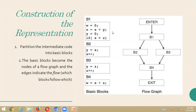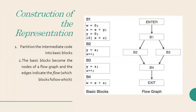A basic block is a sequence of consecutive statements. See here in the example how a basic block looks - it consists of a sequence of consecutive statements. The constraint when defining a basic block is: the flow of control enters at the beginning and leaves at the end, without halt or possibility of branching. Then we can call it a basic block.